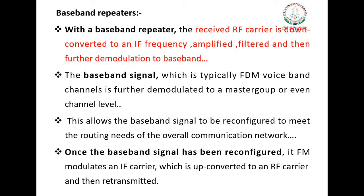With a baseband repeater, the received RF carrier is downconverted to IF, amplified, filtered, and then demodulated to baseband. The baseband signal, which is typically frequency division multiplexed voiceband channels, is further demodulated to a master group or even a single channel. This allows the baseband signal to be reconfigured to meet the routing needs of the overall communication network. Once reconfigured, it FM modulates an IF carrier, which is upconverted to RF and retransmitted.